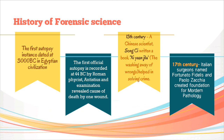Now moving on to the history part. Dating back to 3000 BC, the first instance of autopsy took place in Egyptian civilization, done as a religious practice. Officially, the autopsy has been performed in 44 BC by a Roman physician named Antistius, who examined the body of Roman politician and general Julius Caesar. When he examined the body, he could reveal 23 stabbings, but only one wound had caused the death.